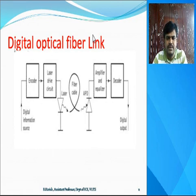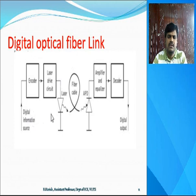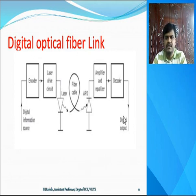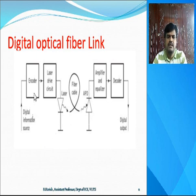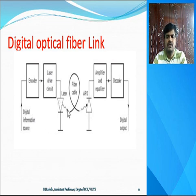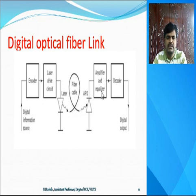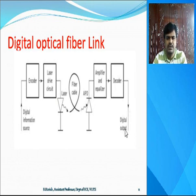This is the digital optical fiber link. You can observe a transmitter end as well as a receiver end. It consists of an encoder block, optical source, laser driving circuit, an optical fiber cable, an amplifier, an equalizer block, a decoder block, and a digital output.